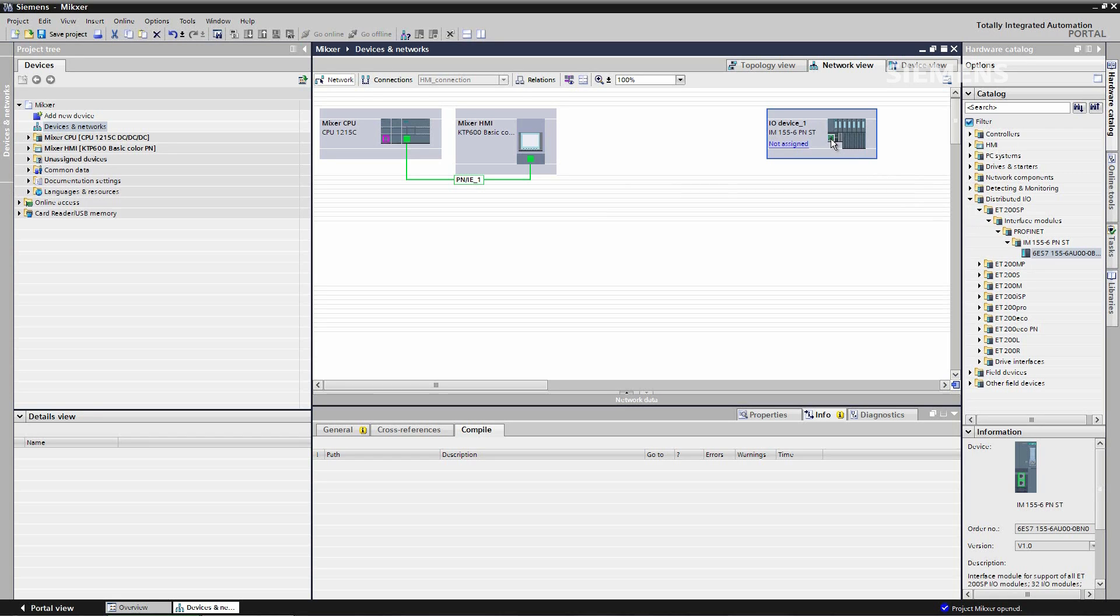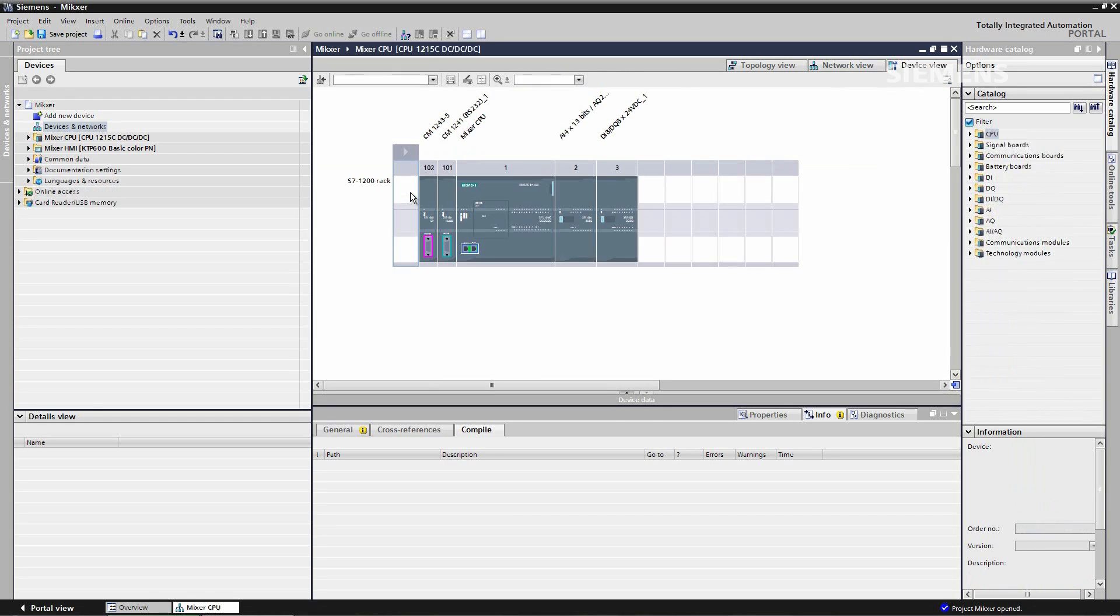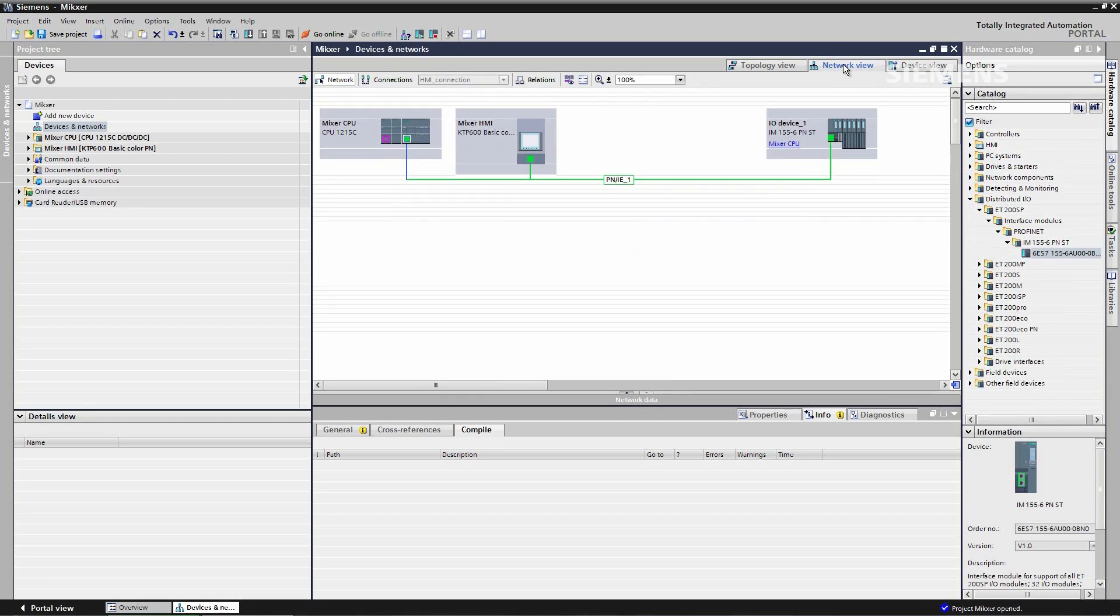I put my mouse on the ethernet port and I drag across to the CPU that I wish to use. Double click. A few seconds later, my ET200SP node will be assigned to the mixer CPU.